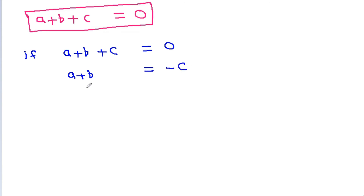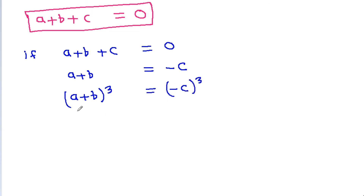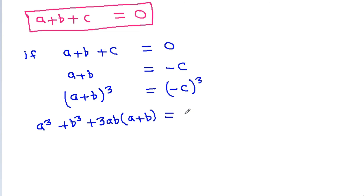And if we cube both sides, then (a plus b) cube will be equal to minus c cube. And (a plus b) cube is a cube plus b cube plus 3ab times (a plus b), which is equal to minus c cube.